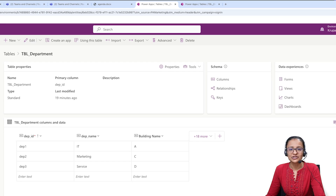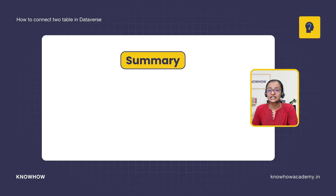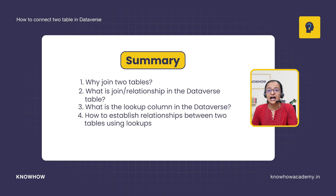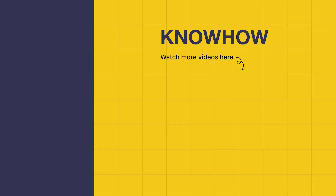Before ending this video, let me summarize what you have learned. First, why there is a need to join two tables. Second, what is the meaning of join in Dataverse. Third, what is the meaning of a lookup column in Dataverse. And fourth, how you can establish a relationship between two tables using a lookup column in Dataverse. Thank you for choosing Knowhow Academy as a source of your IT knowledge. We are always here to help you navigate the tech world. If you have any questions, do not hesitate to reach out to us. Stay curious. Keep learning.